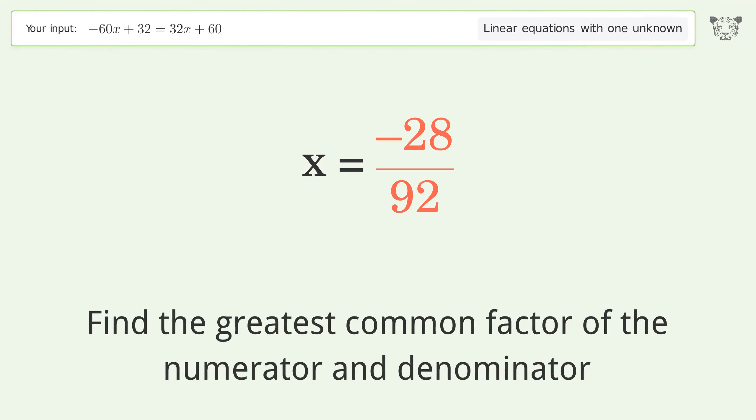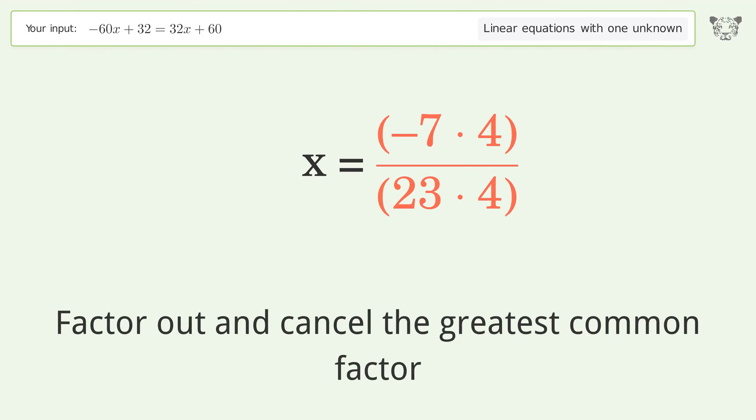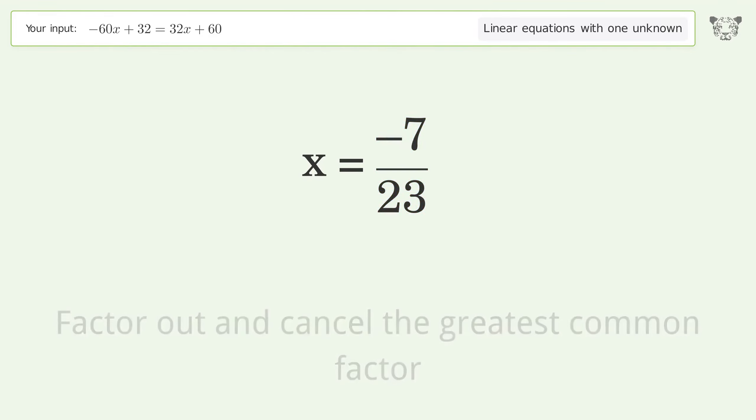Find the greatest common factor of the numerator and denominator. Factor out and cancel the greatest common factor. And so the final result is x equals negative 7 over 23.